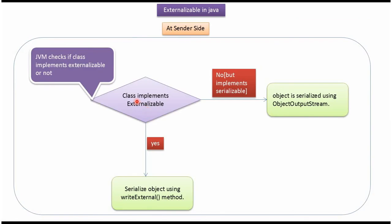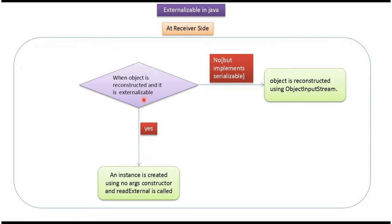JVM will check whether the class implements Externalizable interface or not. If the class implements Externalizable interface, then object serialization will be done using the WriteExternal method. If the class does not implement Externalizable interface but implements Serializable interface, then object serialization will be done using ObjectOutputStream. This happens at the sender side. At the receiver side, when an object is reconstructed and it is Externalizable, an instance will be created using the no-argument constructor and ReadExternal method is called. When the object is reconstructed and it is not Externalizable but implements Serializable, then the object is reconstructed using ObjectInputStream.